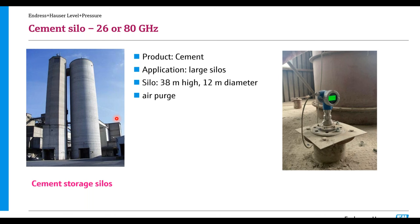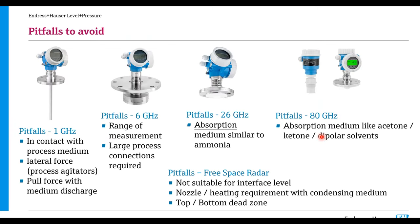For cement silos, the current 80 GHz technology can reach about 40 to 50 meters. We normally run it with an air purge connection directly, so that if there is condensation or cement buildup on the antenna, the air purge removes it.